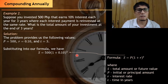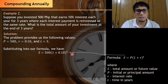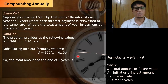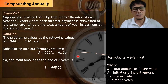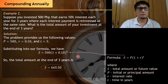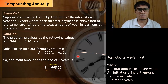Using a scientific calculator — one that allows you to compute expressions with exponents — we find that the total amount at the end of three years is equal to 665.50 pesos. That's how to determine the total amount when using compound interest with compounding done once a year.